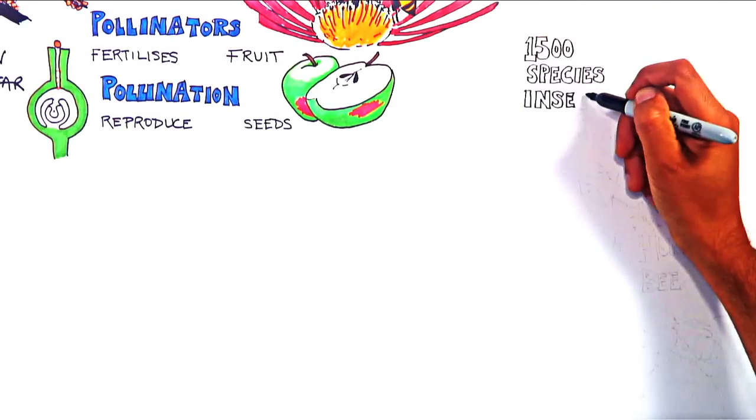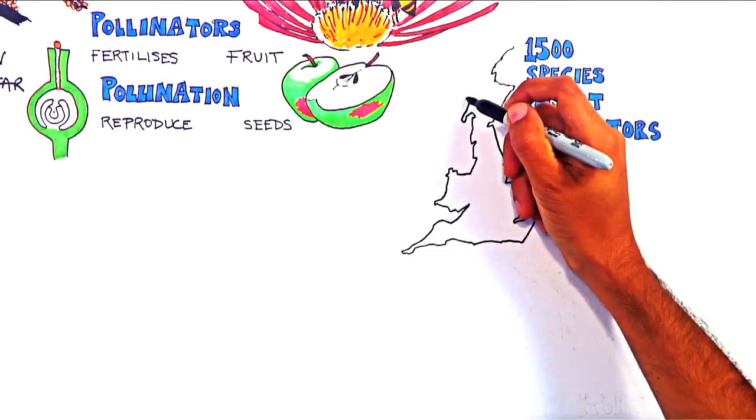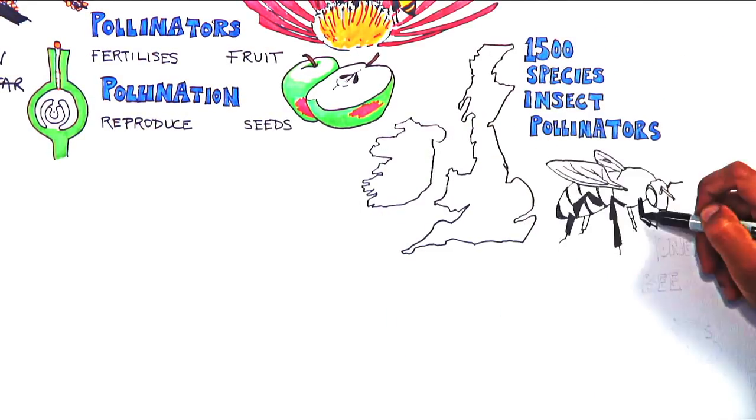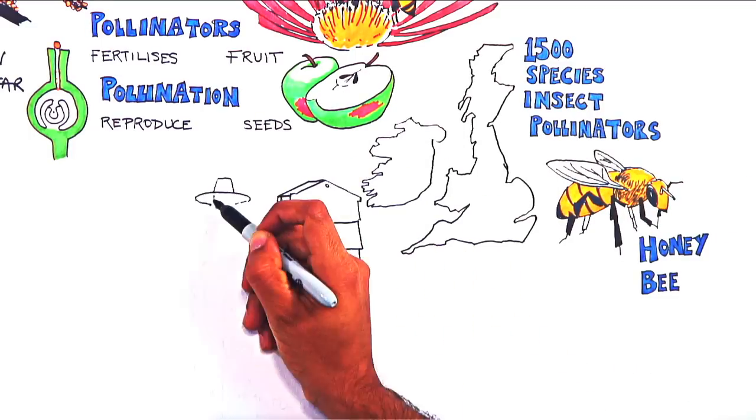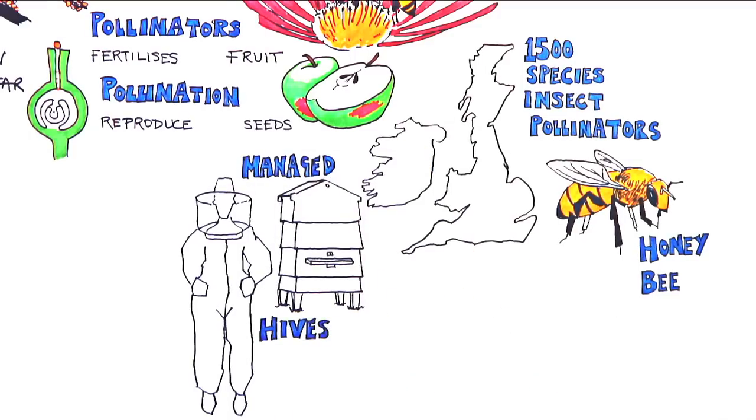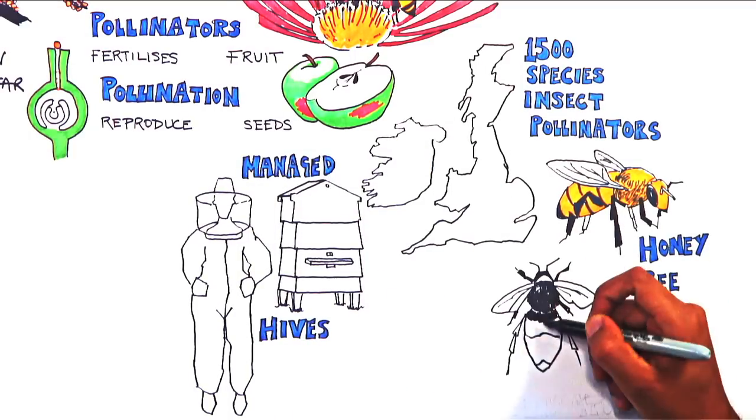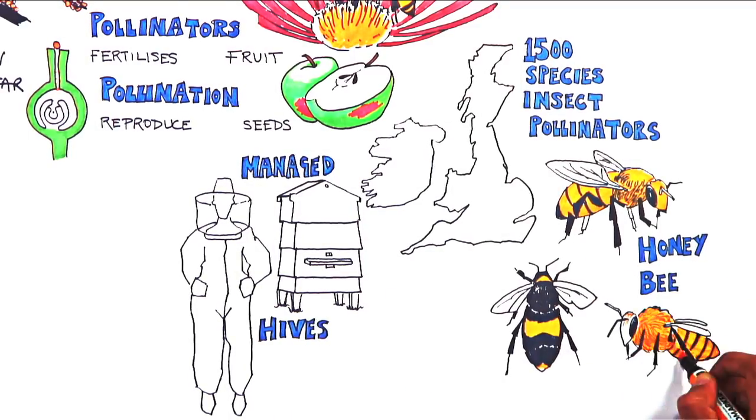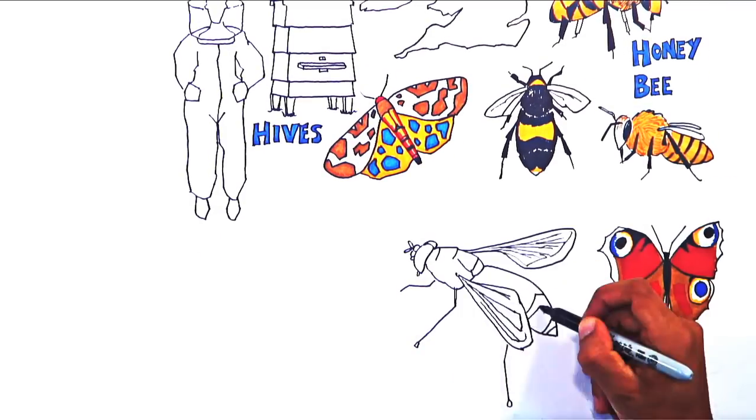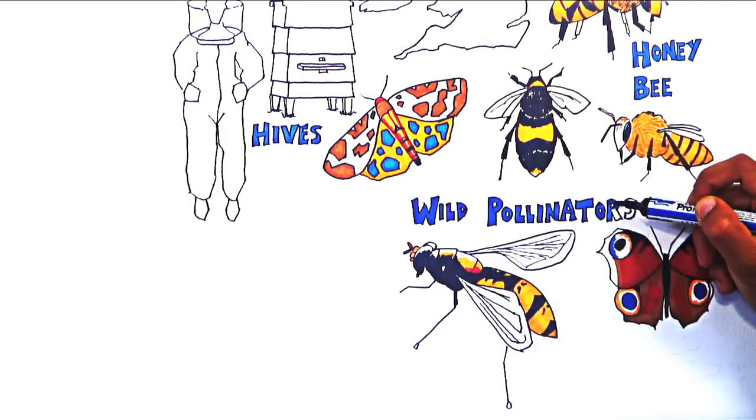There are at least 1,500 species of insect pollinators in the UK. The honeybee lives in hives managed by beekeepers. Others, like many bumblebees, solitary bees, moths, butterflies and hoverflies, are wild pollinators.